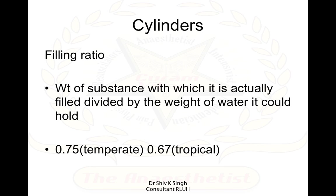We also need to know the filling ratio. The filling ratio is the weight of the substance with which it is filled divided by the weight of water it could hold. In a temperate climate it is 0.75, whereas in the tropics it is 0.67. So only 67% of the cylinder is filled with gases in tropical climates, whereas in temperate climates it can fill up to 75%.